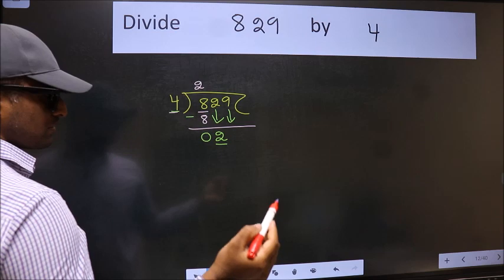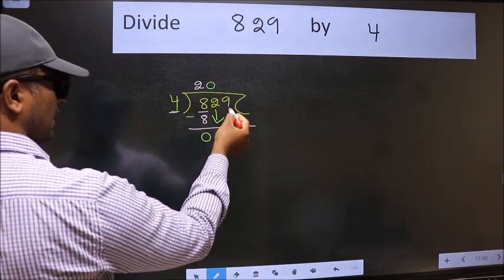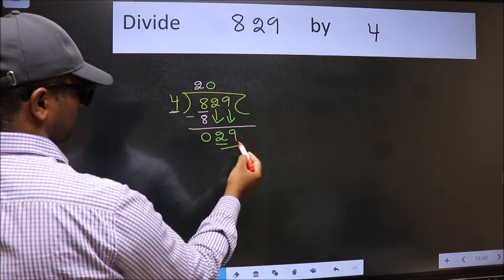And the rule to bring down the second number is we should put 0 here. Then only we can bring this number down. Now 29.